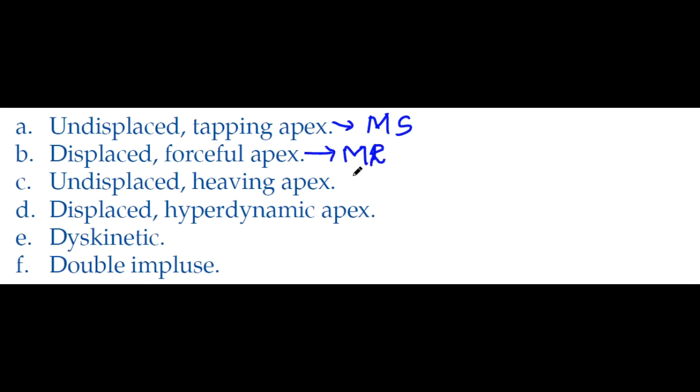Undisplaced and heaving apex beat is aortic stenosis. Because of high pressure, it gives heaving apex beat. Heaving is aortic stenosis, tapping is mitral stenosis. Displaced hyperdynamic apex beat is aortic regurgitation. Dyskinetic apex